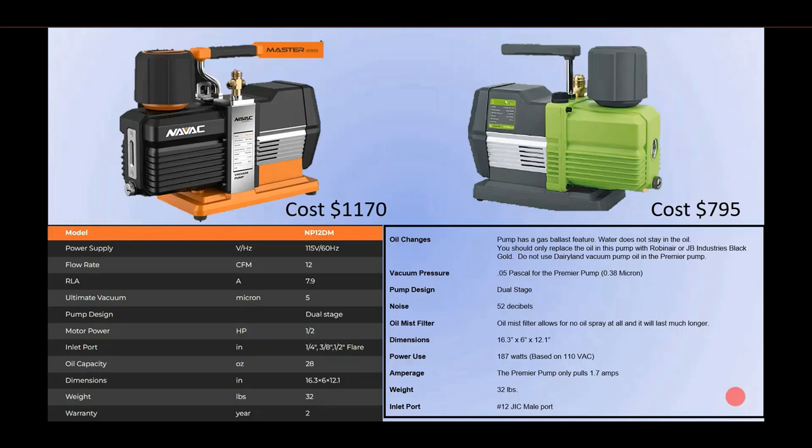At a side-by-side comparison, they're almost a dead ringer, but there are some similarities and some big differences. First of all, let's take a look at the cost. The NAVVAC pump is $1,170 retail, while the cost of the Harvest Right pump is $795. As we go through these specifications, you can see the dimensions are exactly the same: 6.3 inches by 6 inches by 12.1 inches, a dead ringer for both of them.